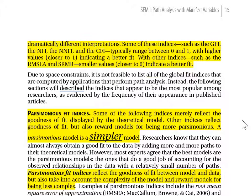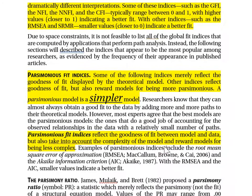Some indices reflect goodness of fit but also reward models for being more parsimonious. A parsimonious model is a simpler model. You can always get a good fit if you make your model super complex, but ideally your theoretical model accounts for relationships while being relatively simple. Parsimonious fit indices reflect goodness of fit but also take into account model complexity, rewarding simpler models. Simpler theoretical models are generally preferred if they do an equally good job accounting for the data.